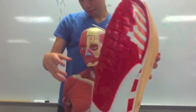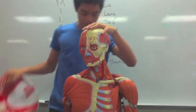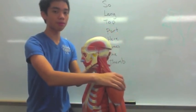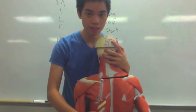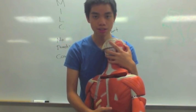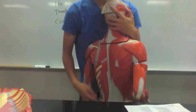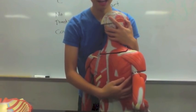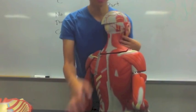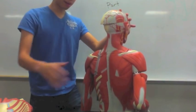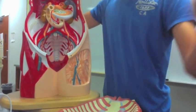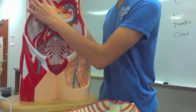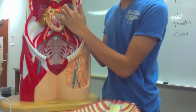Going on to the back, you have the trapezius, which is kind of like a triangle right here. Then you have the latissimus dorsi, which is kind of the lower back area. We also have the diaphragm, which is this muscle right here.